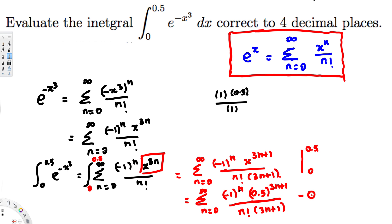For n=1: negative 1 to the power 1 gives a negative sign. We have 0.5 to the power of 3 times 1 plus 1, which is 0.5 to the power 4, over 1 factorial times 4. So the second term is negative 0.5 to the fourth power over 4, which equals negative 0.015625.